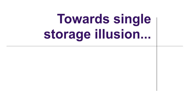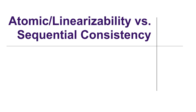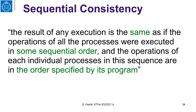We will move to consistency conditions that provide a single storage illusion. We have seen the specification of irregular registers. Now we look at sequential consistency and linearizability — the two consistency conditions we would like to study. We begin with a formal description of sequential consistency and linearizability.